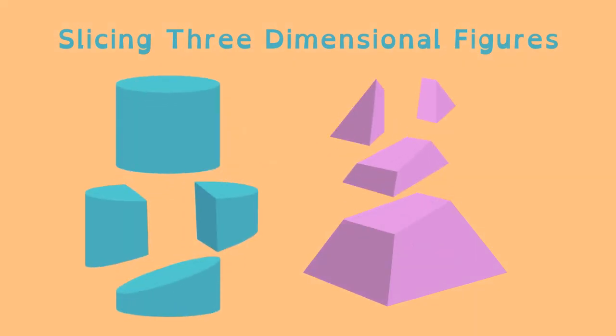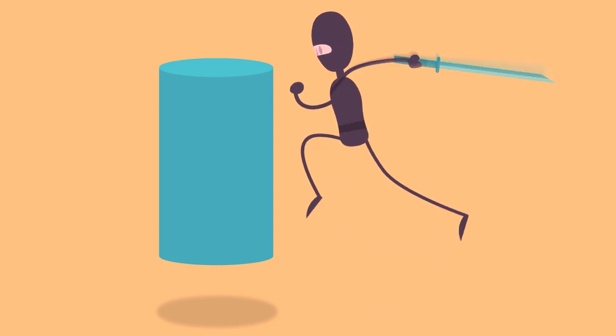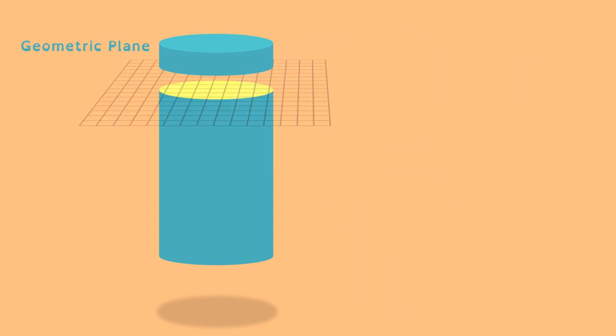Slicing solid three-dimensional figures results in different two-dimensional shapes depending on how you slice them. If you cut through a cylinder with a geometric plane parallel to the cylinder's base, the two-dimensional cross-section is a circle.